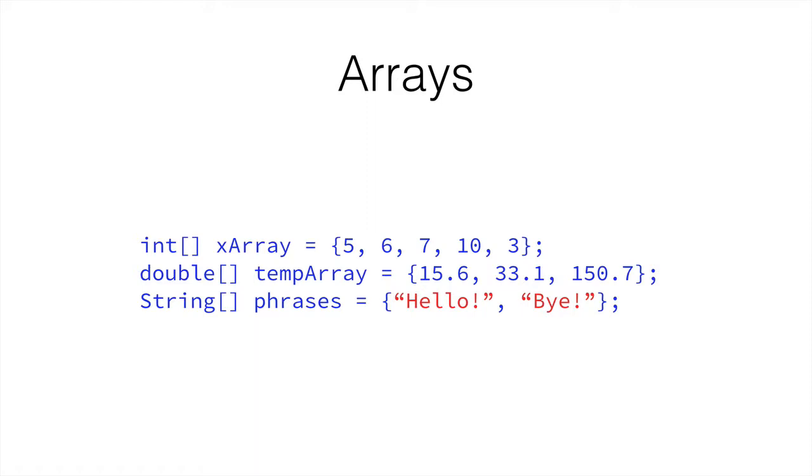So in here we have int, then two square brackets, and then I've called it xArray instead of just x. Although we can name it whatever we want, of course. And then between two curly braces, I have a group of comma-separated values. So in here, xArray as a variable stores the values 5, 6, 7, 10, and 3. So all of those five values are stored inside xArray. Similarly, for tempArray, which could be an array of temperatures for example, it has the values 15.6, 33.1, and 150.7. And similarly, the string array phrases has the two phrases, or two words, hello and bye.